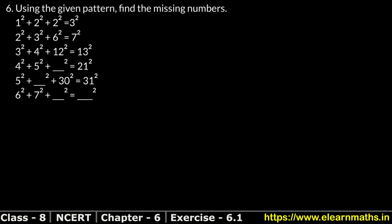We have 1² + 2² + 2² = 3², and 2² + 3² + 6² = 7². If you observe, 1 × 2 = 2, so the third term is 2². Then 2 × 3 = 6, so the third term is 6². Then 3 × 4 = 12, so it is 12². And 4 × 5 = 20, so the next term is 20².